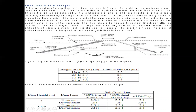A typical design of a small earth field dam is shown in the figure. Here is the top width or crest width. Compacted impervious material is provided to break the seepage line or keep the seepage line below the embankment within the embankment. FSL means full supply level. Here is the freeboard — the vertical distance from the maximum water level to the crest of the dam.